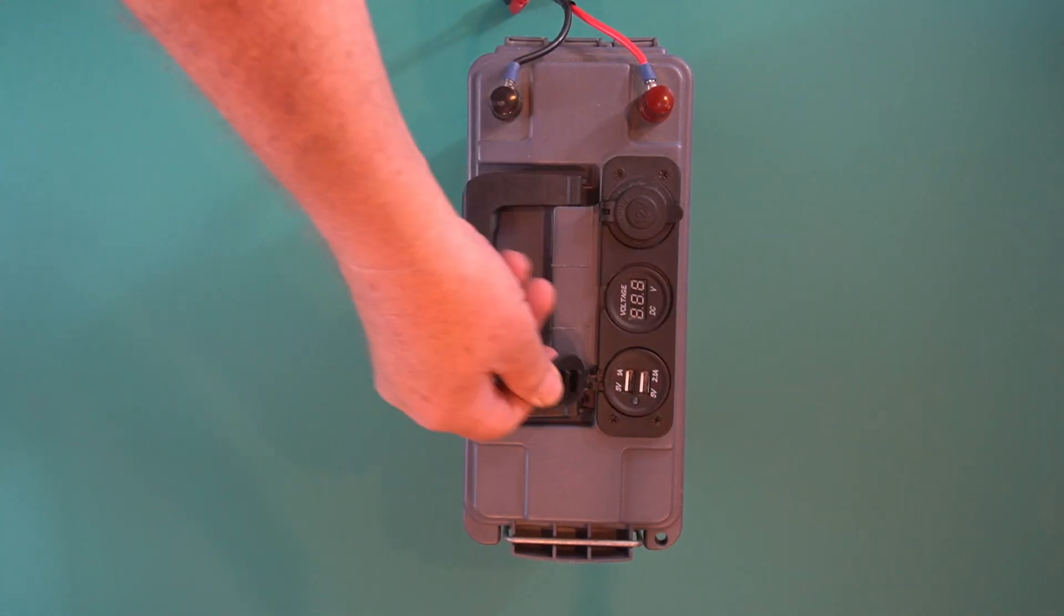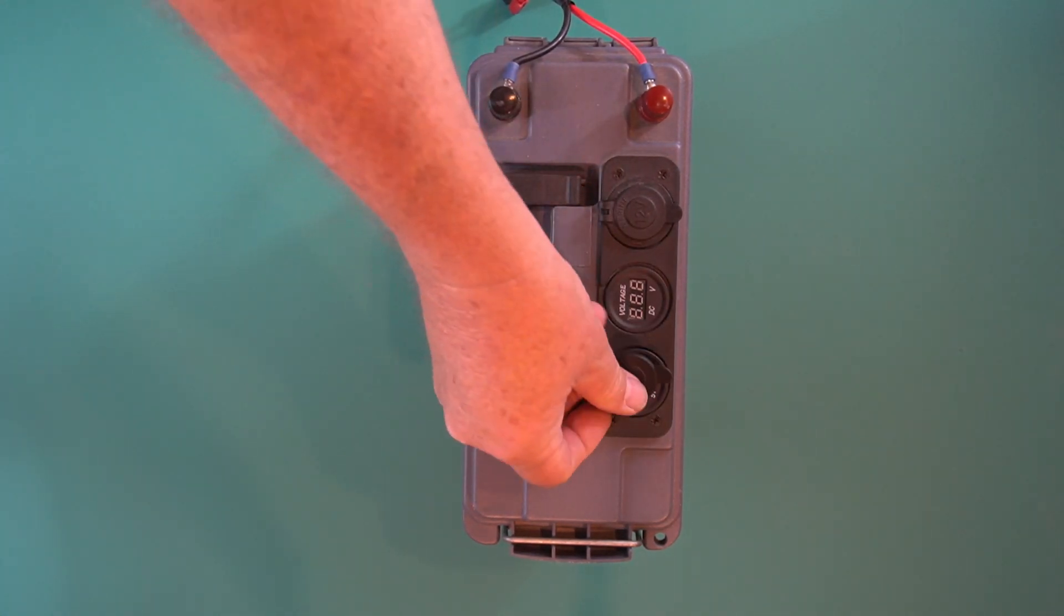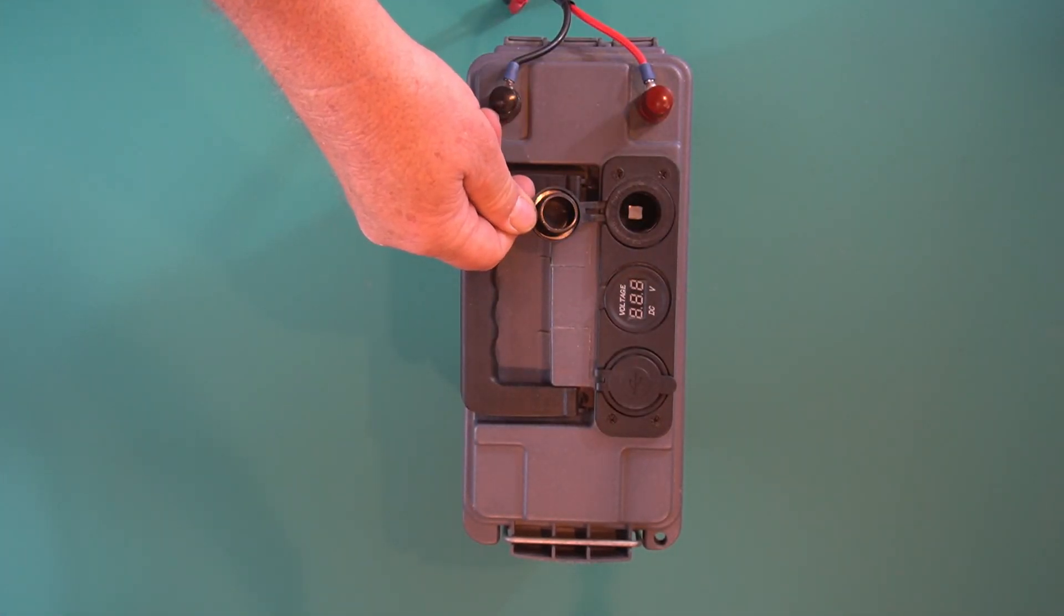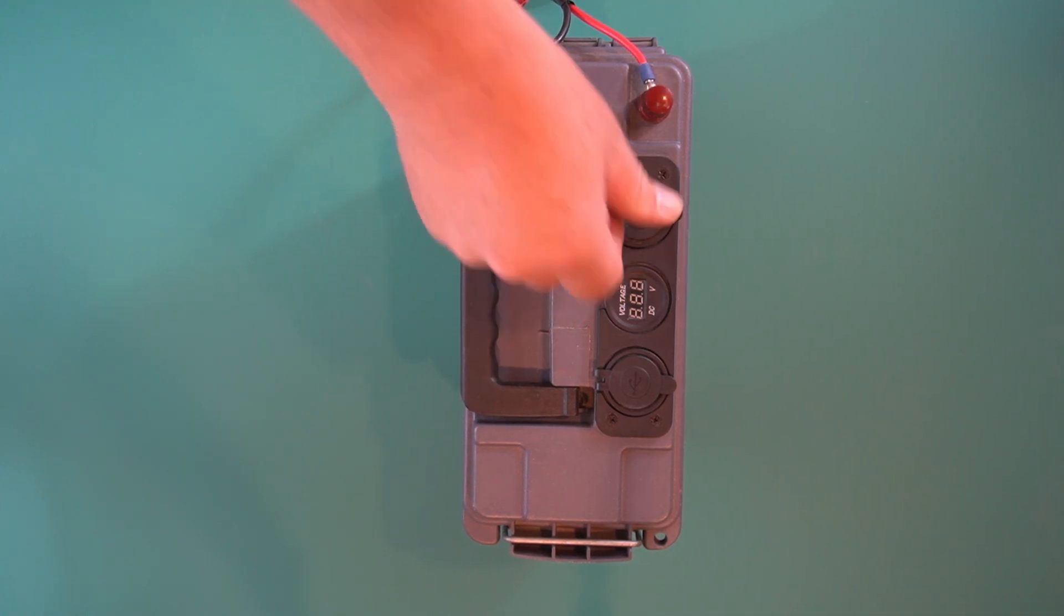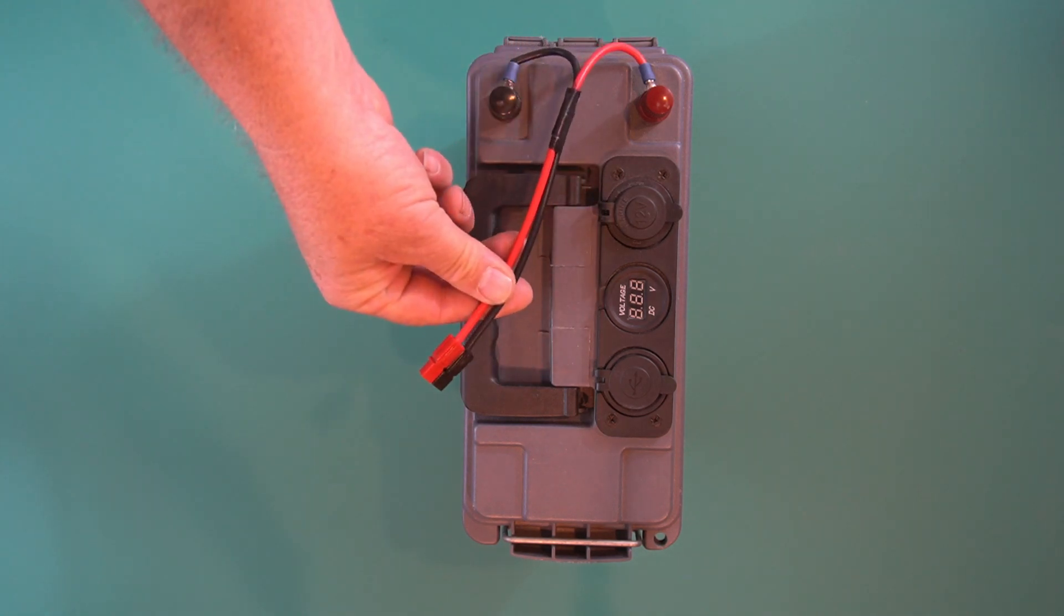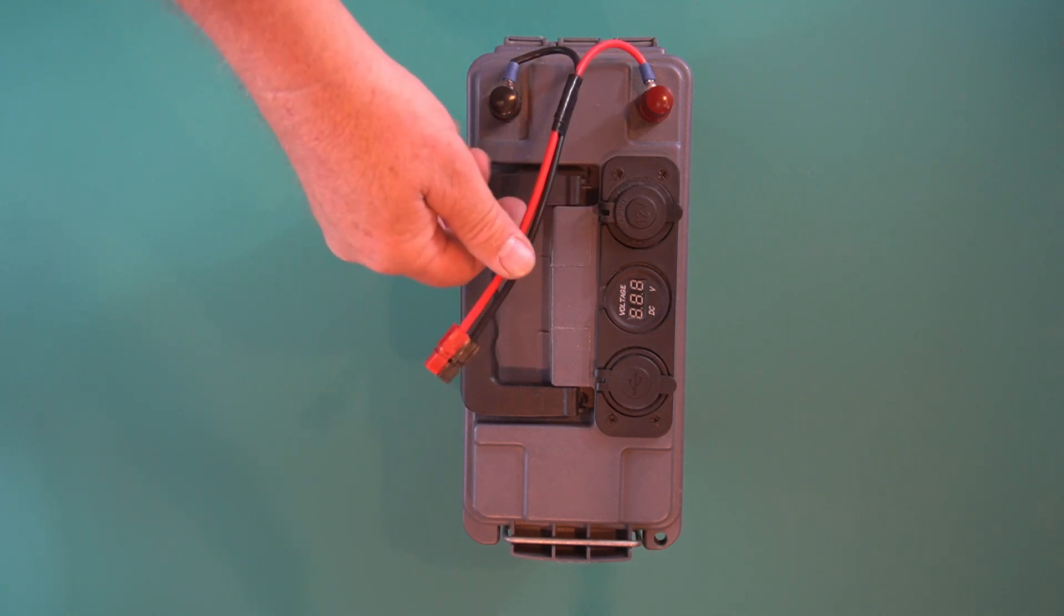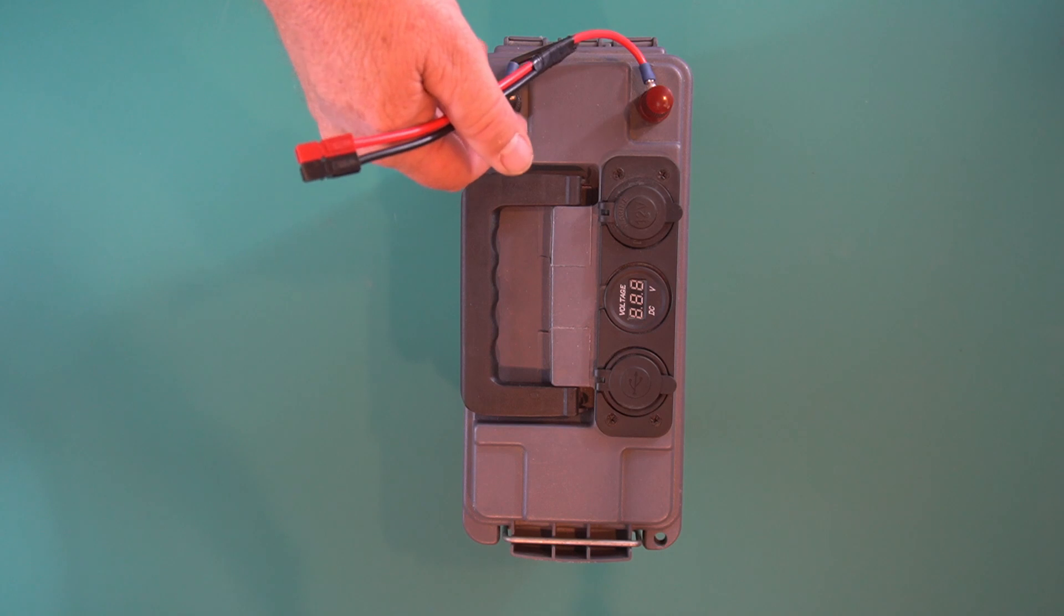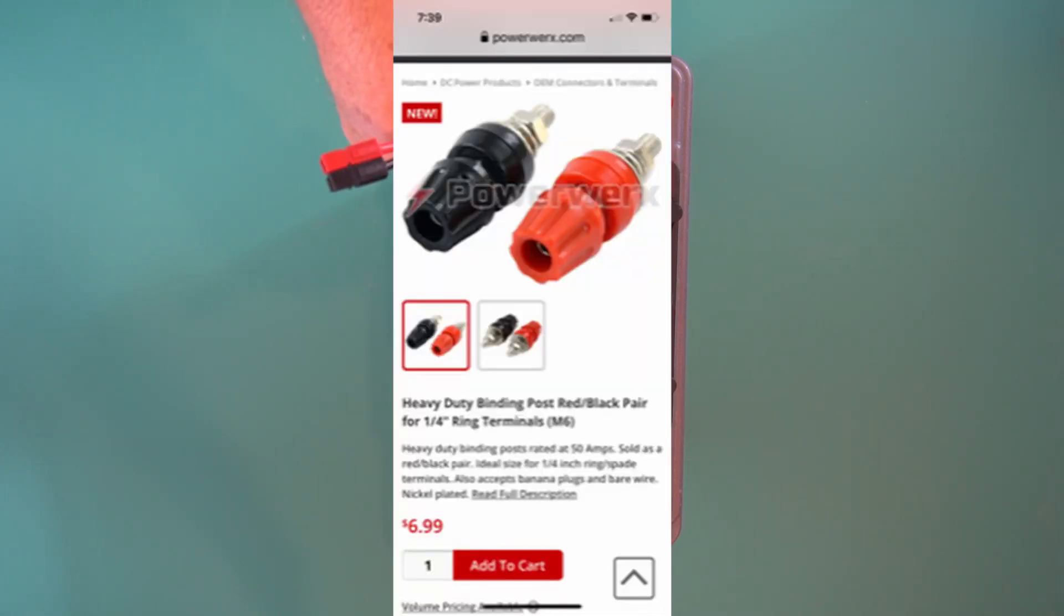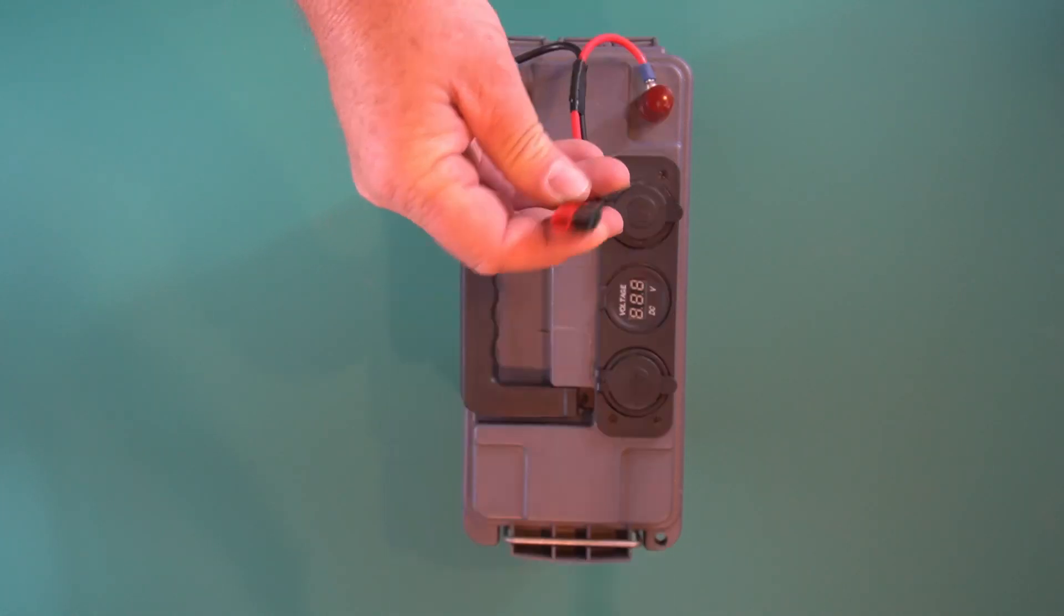On this box I also took a wire hooked to my binding post and these binding posts I already had but I'll show you another set that I actually like better. I'll show those in a picture also and where to get those and I put the Anderson power pole.